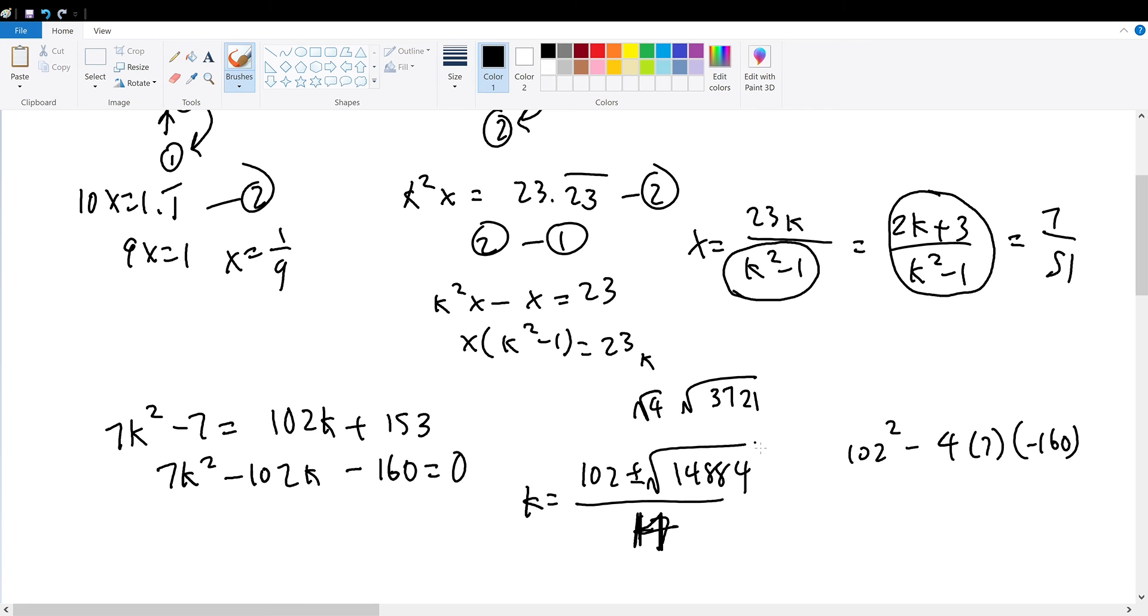But this number can be evaluated further. So if I take my calculator, and I take the square root of 3, 7, 2, 1, I shall get a solution of 61. And 61 times 2 will give me 122. So this entire thing evaluates to 122 squared.